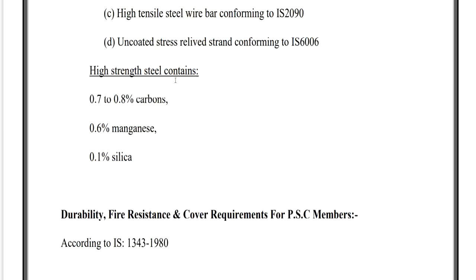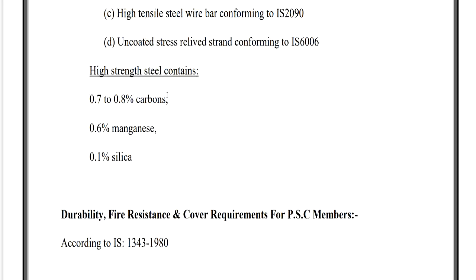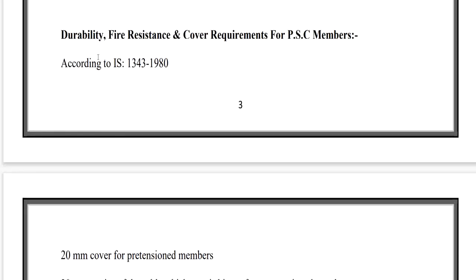High strength steel should contain 0.7 to 0.8% carbon, 0.6% manganese, and 0.1% silica. If the content is more than these quantities, it cannot be used as pre-stressing steel material.